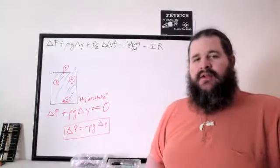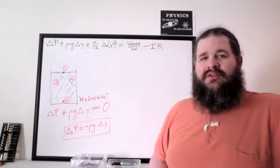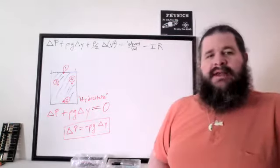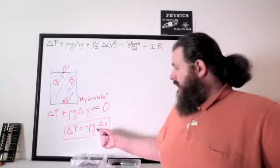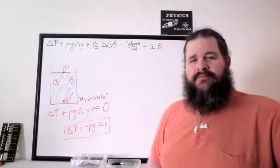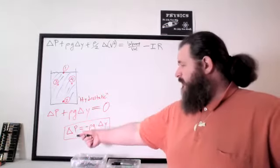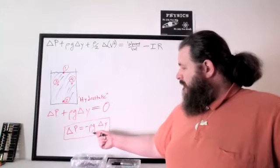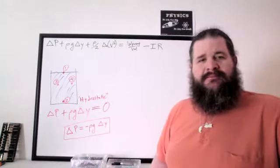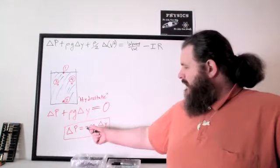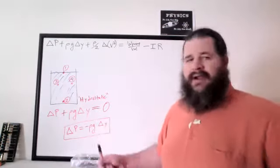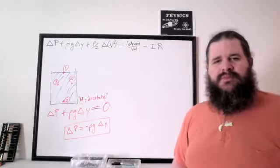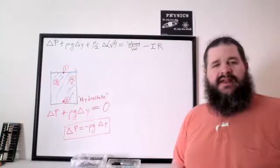In a hydrostatic system, if the heights are the same, there's no delta y, therefore no delta pressure. That's not true more generally — we can't really say that if the fluid is moving, because there may be other terms that throw that off. The constant of proportionality involves the density of the fluid and the strength of gravity. The negative just means these deltas are in opposite directions: as you go up in height, you lose pressure; as you go down in height, you gain pressure.